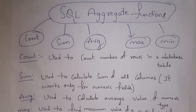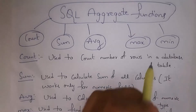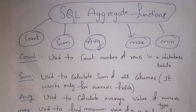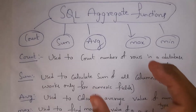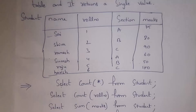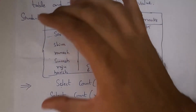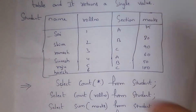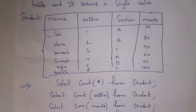First I will explain what the COUNT function is. COUNT function is used to count the number of rows in a database table. To count the number of rows we use the COUNT function. For example, this is a student table — I want to count the number of rows present in this table.